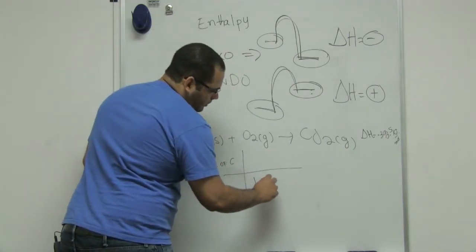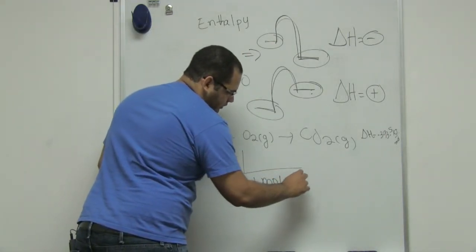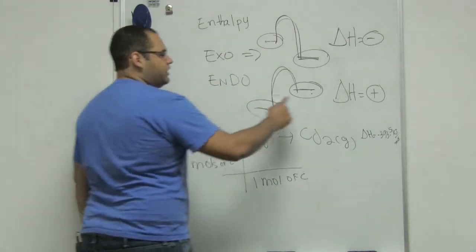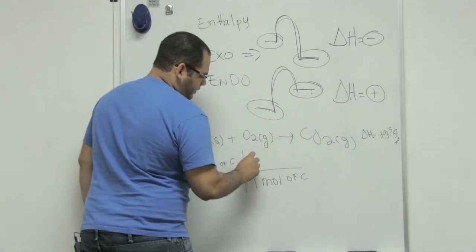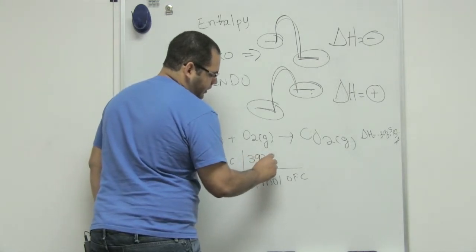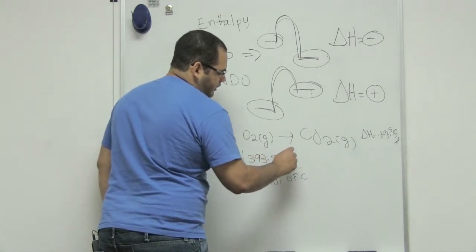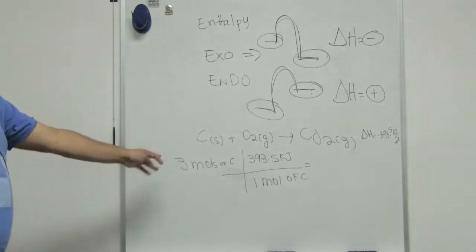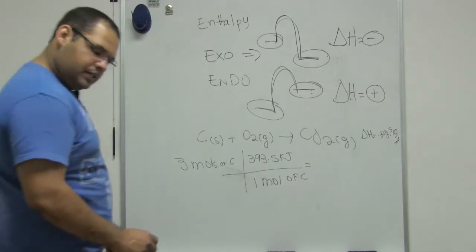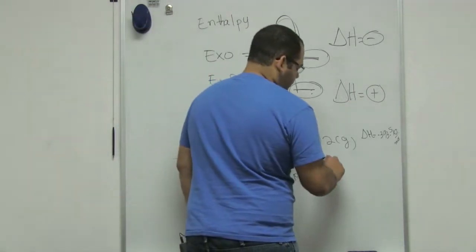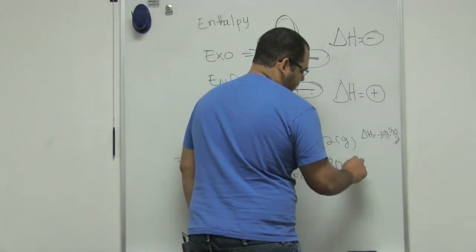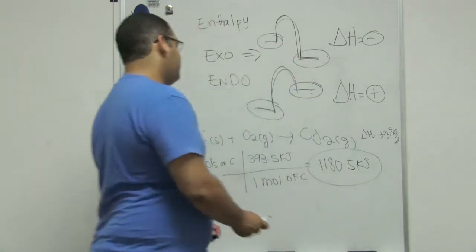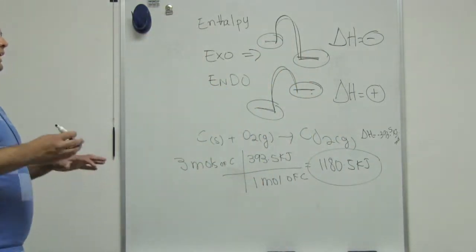For one mole of carbon that we have here, we actually released 393.5 kilojoules. So I just do 3 times 393.5 and I got 1180.5 kilojoules released with 3 moles of carbon reacting.